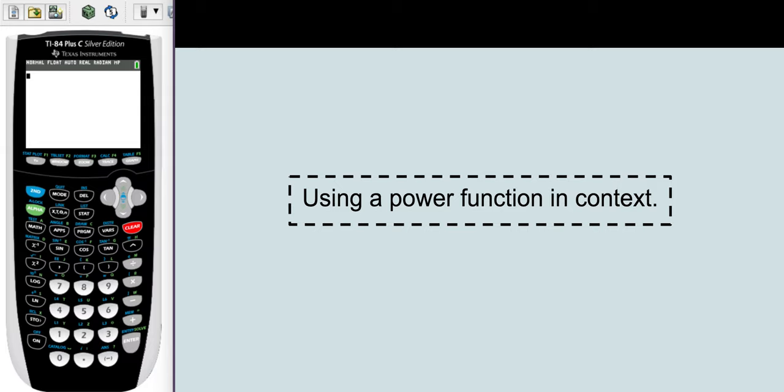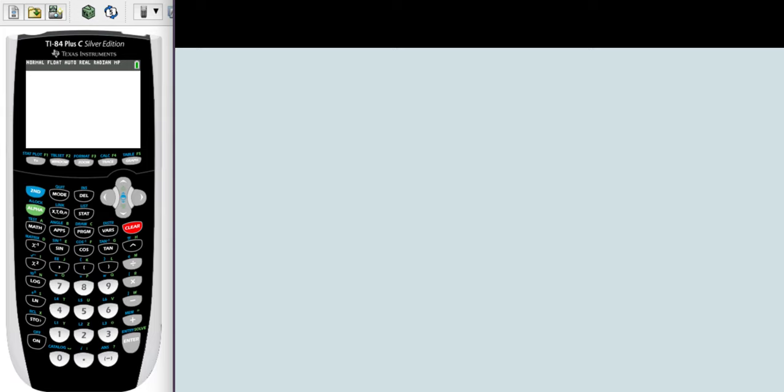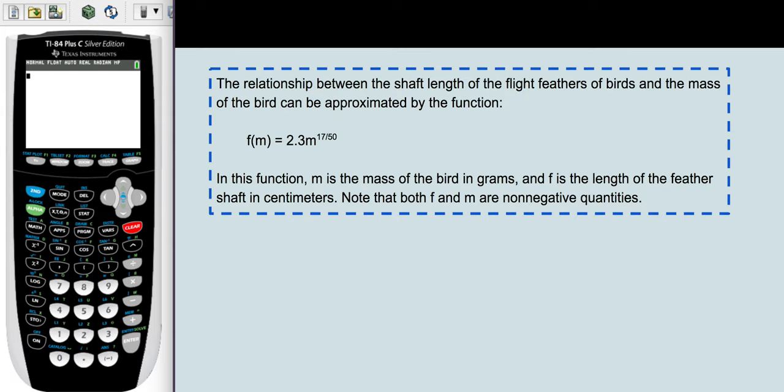Welcome! Let's take a look at using a power function in context. The relationship between the shaft length of the flight feathers of birds and the mass of the bird can be approximated by the function f(m) = 2.3m^(17/50).